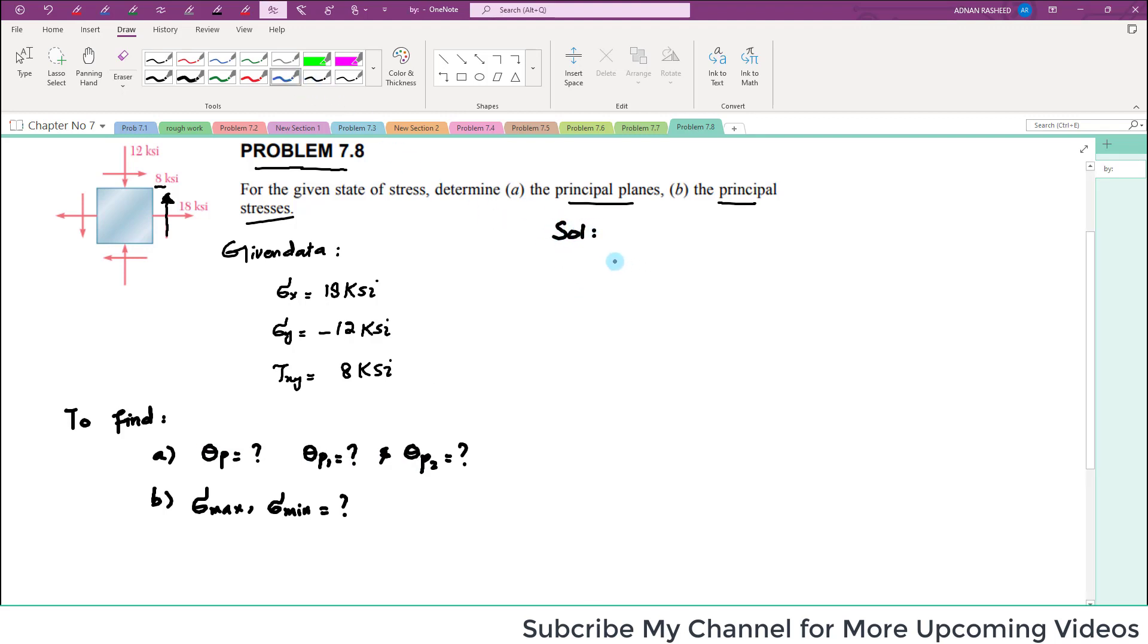For part A, we know that tan(2*theta_p) equals 2*tau_xy divided by (sigma_x minus sigma_y). So you have to put the values: 2 times 8 divided by sigma_x which is 18